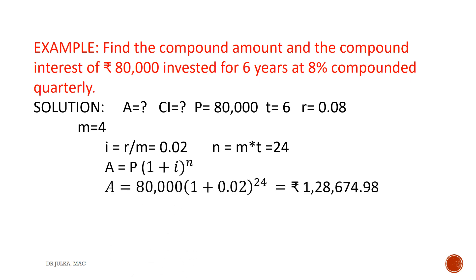In this example, we want to calculate amount and compound interest. Amount equals principal multiplied by 1 plus I raised to the power N. P is 80,000, I is 0.02, and N is 24. By inserting the values of P, I, and N into the formula, we will get an amount of rupees 1,28,674.90.